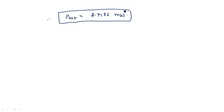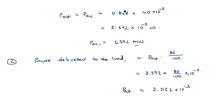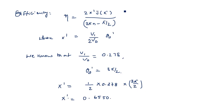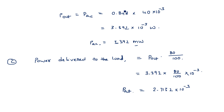In the next video I will explain the third problem, which is used to calculate the gap transit angle θ_g. The power calculations are very important and easy — if we know efficiency, we can relate output power to input power simply using η = P_ac / P_dc. We calculated efficiency, then output power, and finally the power delivered to the load when there is a 20% loss in the cavity.